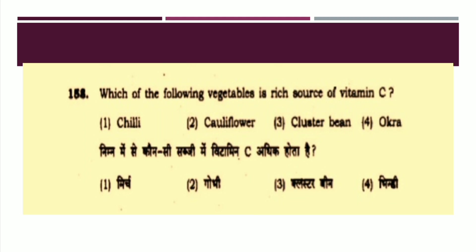Which of the following vegetables is a rich source of vitamin C? The options are: Chili, Cauliflower, Cluster bean, or Okra. The right answer is Option two: Cauliflower.